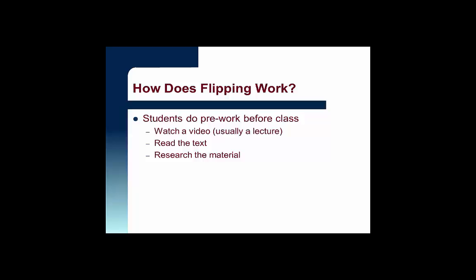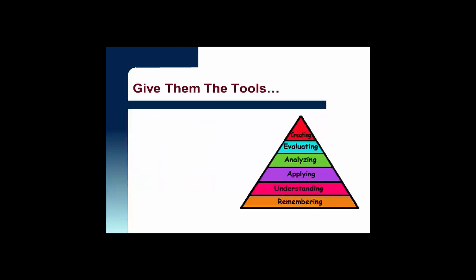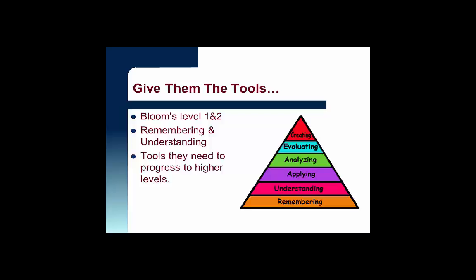Then, in class, exercises are done at higher cognitive levels. These could be group learning techniques or projects, lab work, or an instructor-guided assignment. The idea is to give them the tools that they need before class — specifically those at Bloom's levels 1 and 2: remembering and understanding. These are, after all, the tools that they need to progress to higher levels of cognition.